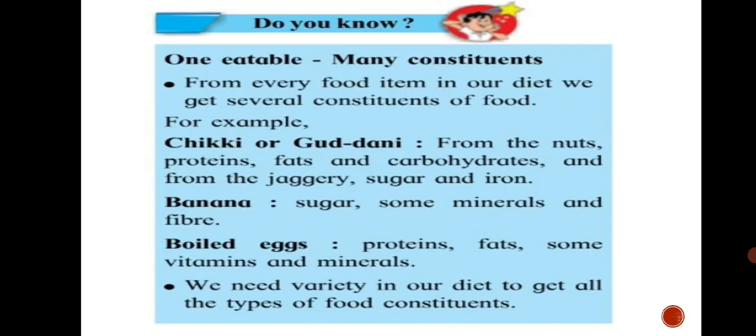From this you will understand that macronutrients as well as micronutrients are essential for proper development of our body and also for our growth. Do you know, one eatable can contain many constituents? From every food item in a diet, we get several constituents of food. For example, chikki or gurdani. From the nuts, proteins, fats, carbohydrates. And from the jaggery, we get sugar and iron. So, so many constituents of food are obtained by eating chikki.